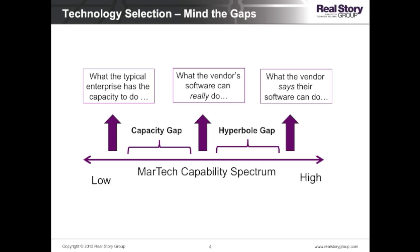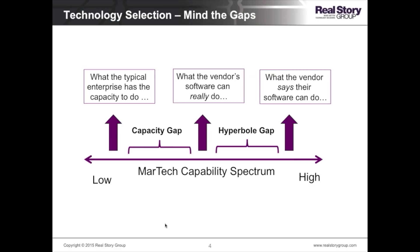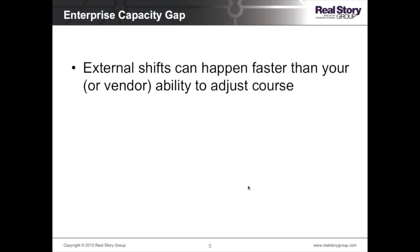But in our experience working with so many enterprises across the globe, we increasingly get the sense that the tools are way ahead of many organizations' ability to leverage them effectively. So you not only want to assess what the tools can really do, but also what you can do with them. There are two gaps: the capacity gap — the difference between what tools can do versus what you can do with them — and the hyperbole gap — what the vendor says their software can do versus what it can really do.